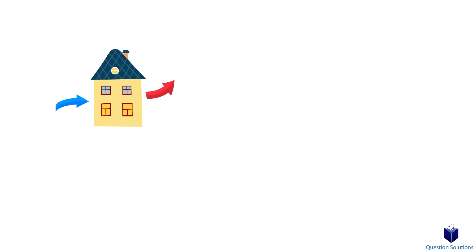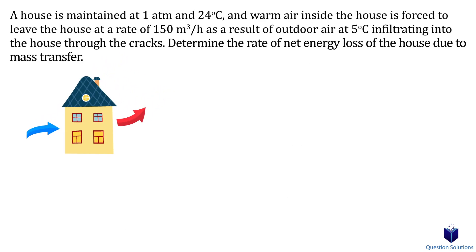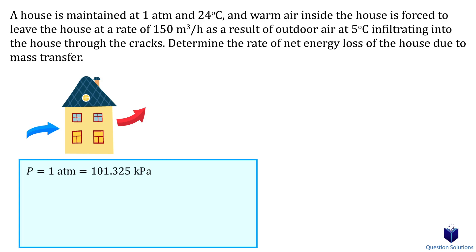In this question, we have a house that's at 1 atm and a temperature of 24°C. When cold air enters the house, the warm air leaves, and we need to figure out the rate of net energy loss due to this mass transfer. Let's write down what we know: the pressure is 1 atm or 101 kilopascals, the temperature outside is 5°C.